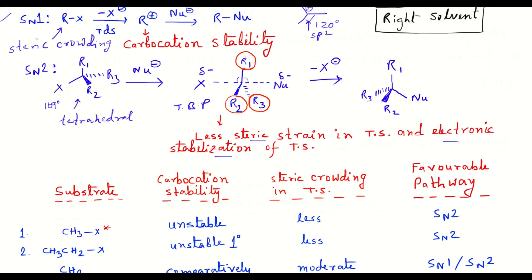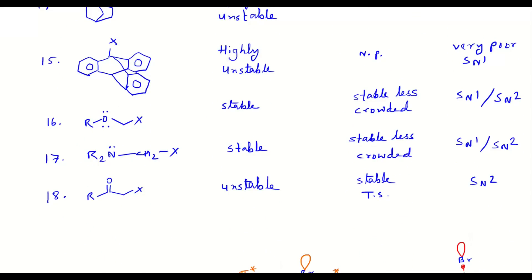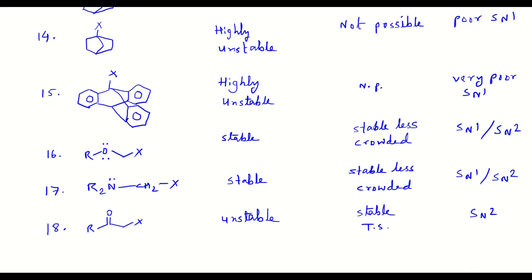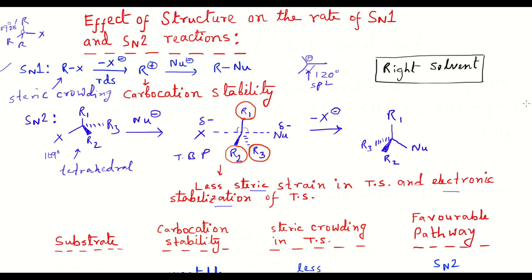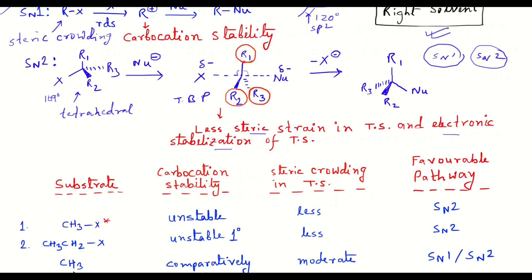Now let us move to the examples. There are 18 examples in total, and I will explain thoroughly how each goes through SN1 or SN2 mode based on the stabilization taking place in the transition states. One more important thing is the choice of the right solvent. If we choose a polar protic solvent, the molecule can go to the SN1 pathway; if we choose a polar aprotic solvent, it will go to the SN2 pathway, as discussed in the previous video.